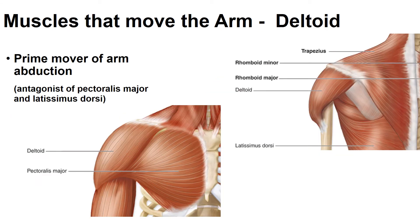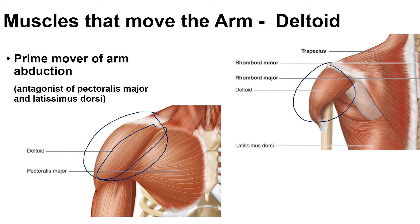The deltoids are superficial muscles that give the rounded contour of our shoulder. This muscle is very thick and powerful, seen on both the anterior and posterior sides. The main function is as a prime abductor of the arm, though the different fibers have different actions. The anterior fibers help with flexion and medial rotation of the arm. The middle fibers are responsible for prime abduction of the arm. The posterior fibers are for extension and lateral rotation of the arm.